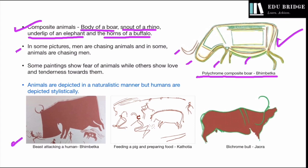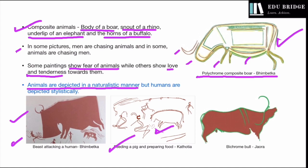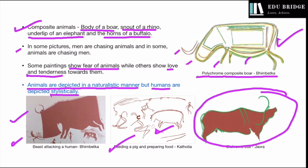Some paintings show a huge beast chasing a very small human figure, depicting fear of animals, while others show love and tenderness — for example, a family scene where a pig is being fed by members of the family. A key observation is that animals have been depicted in a naturalistic manner, but humans have been depicted stylistically as stick figures, while animals have very realistic, life-like figures, such as the bichrome bull found at Jawra.